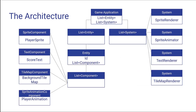Here's how they all relate. At the top we have the game application — it has a list of entities and a list of systems. I create an instance of every system up front and put them where they need to be executed at every iteration of the game loop. Then I have a list of entities I can create and destroy throughout the game. Each entity has a list of components, and each component has its own behavior. On the left are example components, and on the right are corresponding systems — one for sprites, one for text, tile maps, sprite animation, and so on.